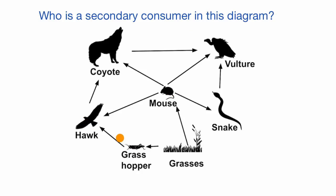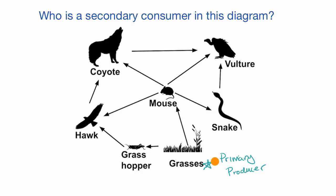Likewise, a hawk eats a grasshopper. So now that we understand this diagram, let's label where these various folks fit in the food chain. The grasses are a primary producer — they use photosynthesis to take light energy from the sun, in conjunction with carbon dioxide in the air and water, in order to store energy in their bonds.